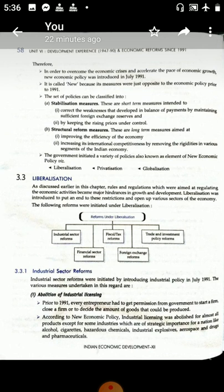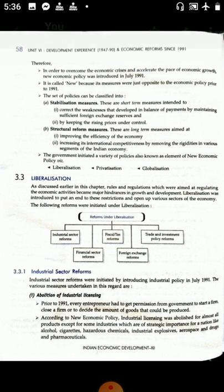In order to overcome the economic crisis, the new economic policy was framed. The most important element was Stabilization Measures — to correct the weakness in the balance of payment by maintaining sufficient reserves. The primary focus was to maintain foreign exchange reserves and control prices. Other key features included improving efficiency, competing with MNCs, making domestic companies competitive in the world market, growing foreign reserves, and controlling prices.